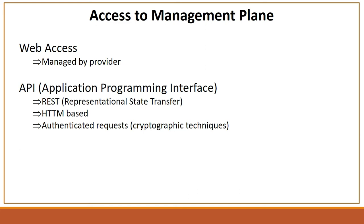There are two ways to access the management plane: web access, which is managed by the provider, and APIs — Application Programming Interface — which use REST (Representational State Transfer) and are HTML-based authenticated requests. For example, cryptographic tokens are used when services are accessed through APIs. When a calling application accesses the management plane via APIs, it is provided a signed token that must be submitted with each request for proper authentication.